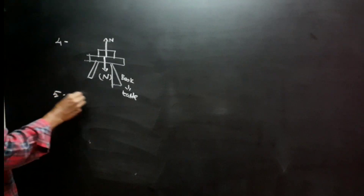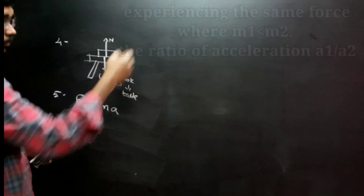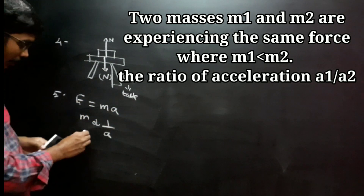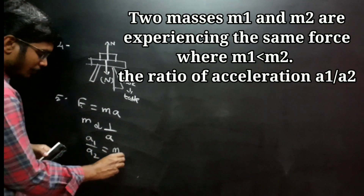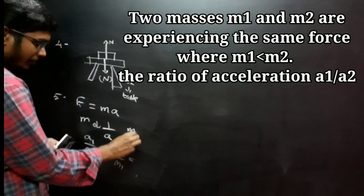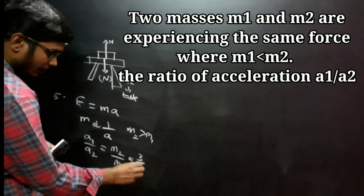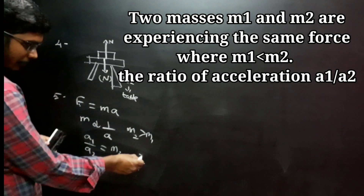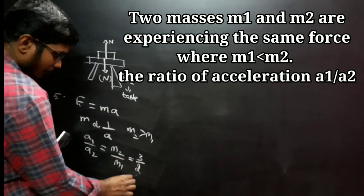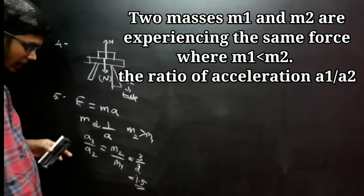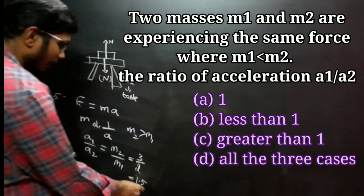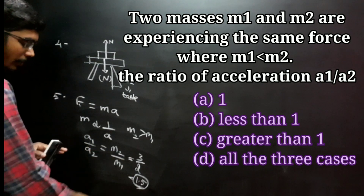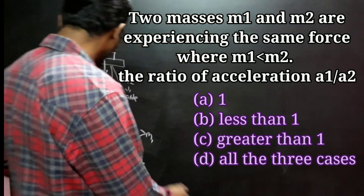Question number 5: F equals ma. With F constant, M is inversely proportional to acceleration. Acceleration of body 1 by body 2 equals m2 by m1. M2 value will be greater than m1. Option C.